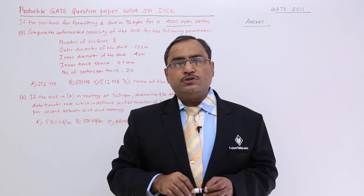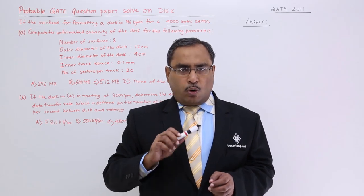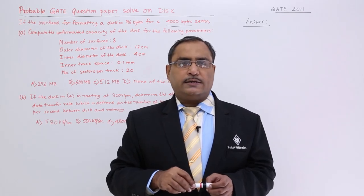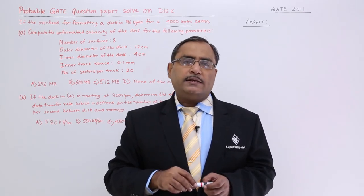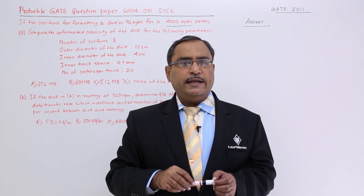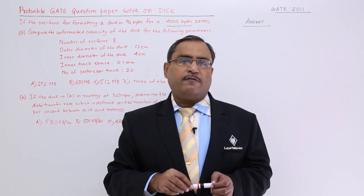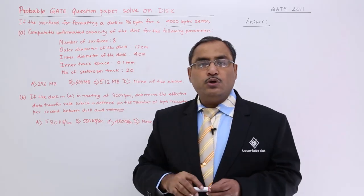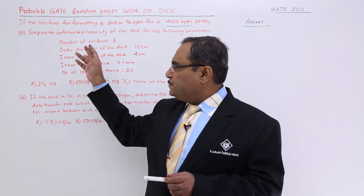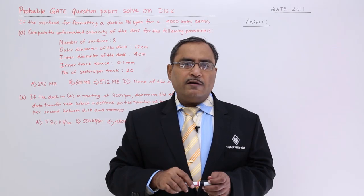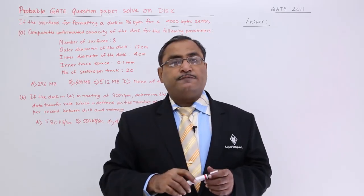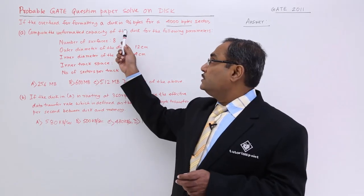Formatting of a disk means we are imposing a coordinate system on the disk surface — defining tracks and sectors. In between tracks and sectors there will be some gaps, causing wasted disk space. The formatted capacity will always be lesser than the unformatted capacity. This overhead is the space not used after formatting, per sector. For unformatted capacity problems, we do not consider this overhead, but for formatted capacity problems, we do.